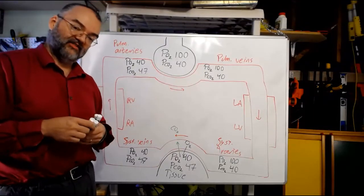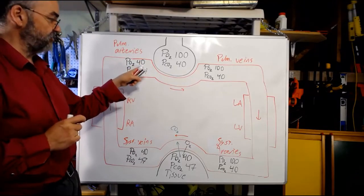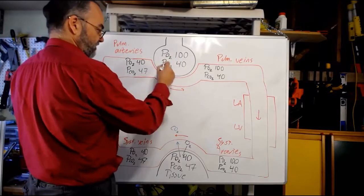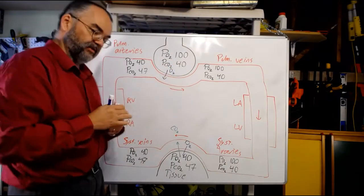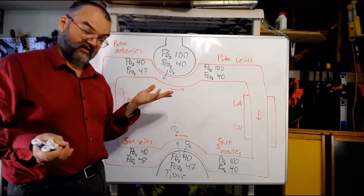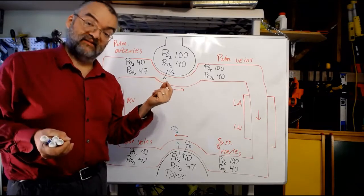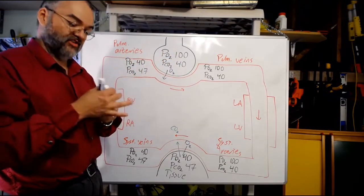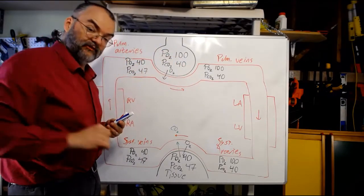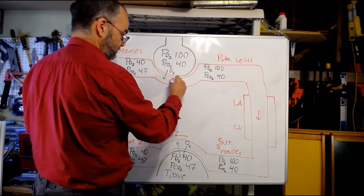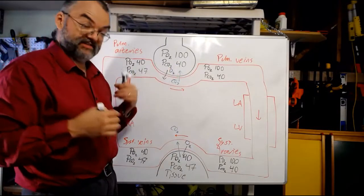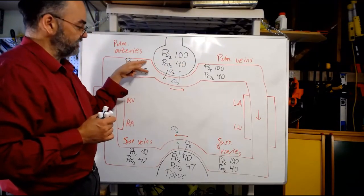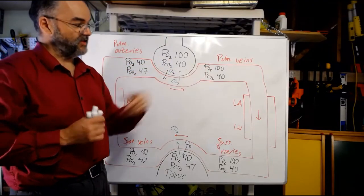Now we head around the lungs. In the pulmonary capillaries, blood pO2 is 40 and alveolar pO2 is 100, so oxygen moves from air to blood. And the alveolar pO2 stays constant because we keep breathing, refreshing the air. Similarly, pCO2 is higher in blood (47) than in alveolar air (40), so CO2 moves from blood to air. That number stays steady as I breathe out the CO2. So the blood reaches equilibrium with the alveolar air, coming away at pO2 of 100 and pCO2 of 40.